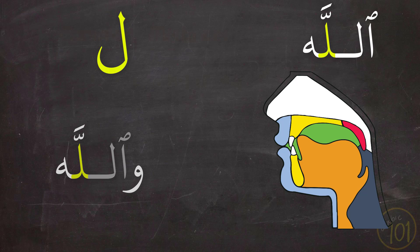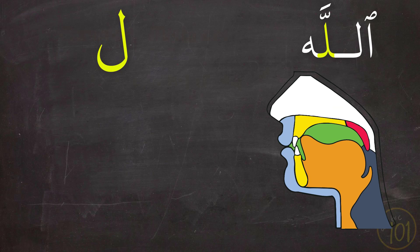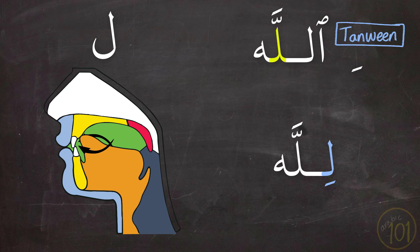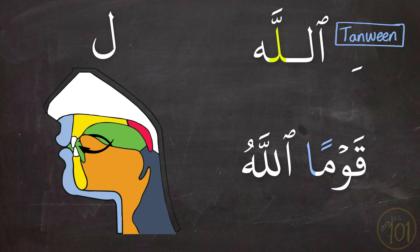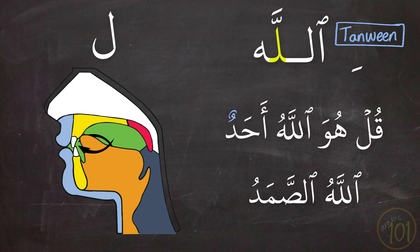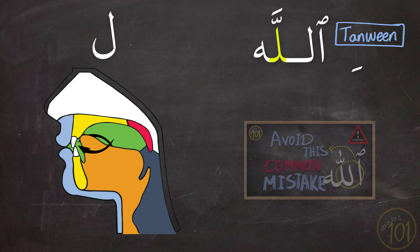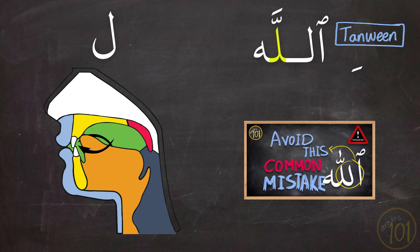It is important to know that in certain cases, the honored word Allah is pronounced with a light Laam. That happens when it is preceded by a Tanween or a Kasra. There is more to the rules of Laam in the word Allah than that, which is explained in full in this lesson, so check it out if you need to refresh your memory.